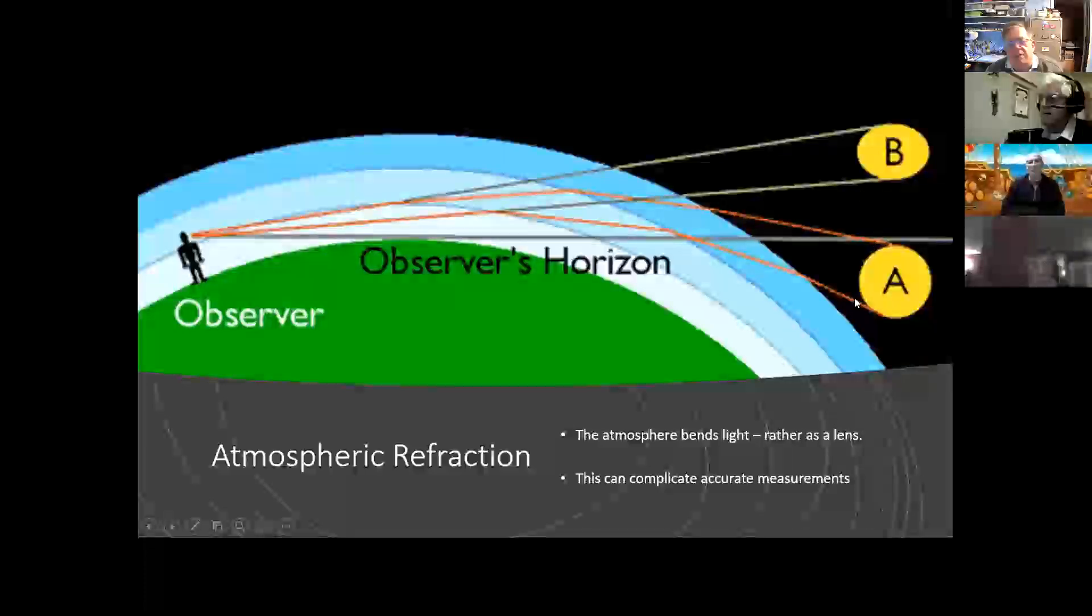And in fact, it can mean that the Sun has already set by 1.5 degrees, when you can still, in fact, see it, because the light is being bent over the horizon to you. And really, that was the difference. If he had known that he had to correct for that, he would have probably used a number of 89.5 degrees in his calculations and got a much, much closer number.